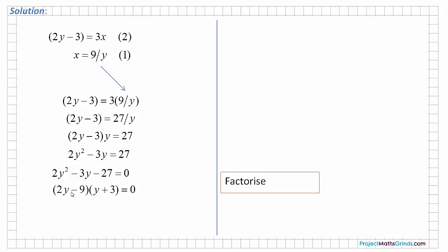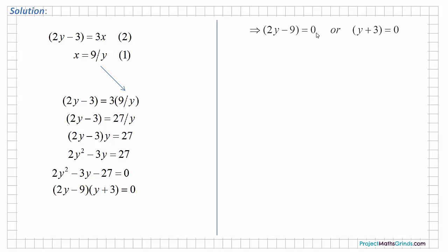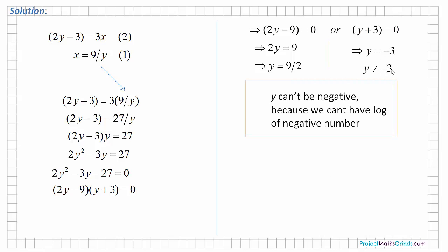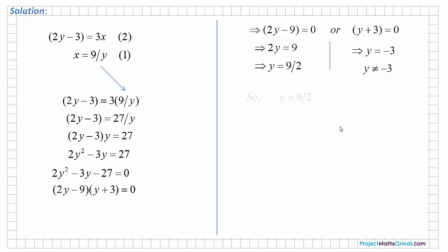Bringing the 27 across gives a quadratic equation which we can factorise as follows: 2y minus 9 times y plus 3 equals 0. So 2y minus 9 equals 0 or y plus 3 equals 0, giving y equals 9 over 2 or y equals minus 3. But y cannot equal minus 3 because we cannot have the log of a negative number, so we discard that solution. Therefore y equals 9 over 2.